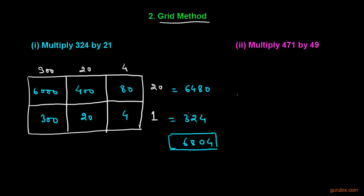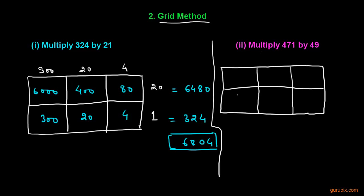This is called the grid method. Let us take another example: multiply 471 by 49. We draw the grid, writing 471 in expanded form as 400 plus 70 plus 1 and 49 as 40 plus 9. Multiplying 400 by 40 gives 16,000.